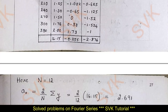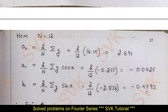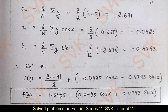Here I have provided the solution. The values obtained are: a₀ = 2.691, a₁ = −0.0425, and b₁ = −0.4793. Substituting these into the equation, we get f(x) = 1.345 − 0.0425 cos x + 0.4793 sin x, which is the required solution.